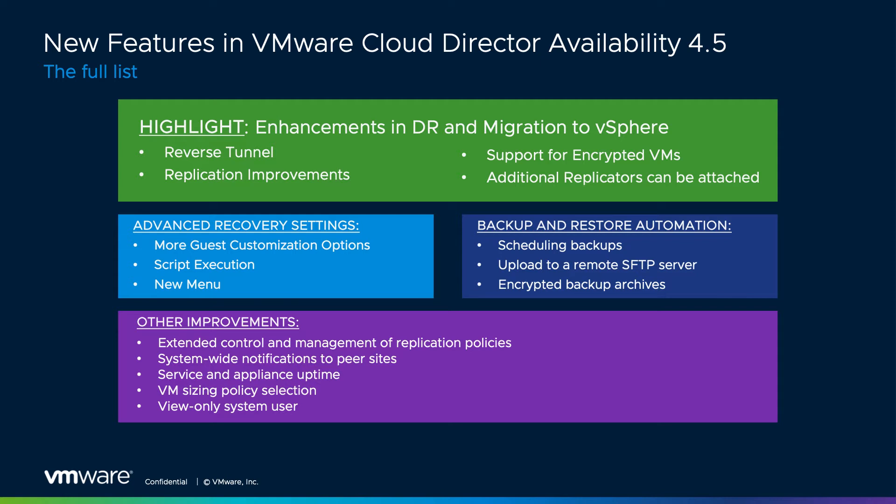And this is not all. There are some features that simplify the provider's operations and improve their tenants' overall experience. You can now clone replication policies for easier management and prohibit the migrations from cloud to on-premises through them. Using the VMware Cloud Director advisories, cloud providers can now push notifications to their tenants that are visible in the VMware Cloud Director Availability Portal too.